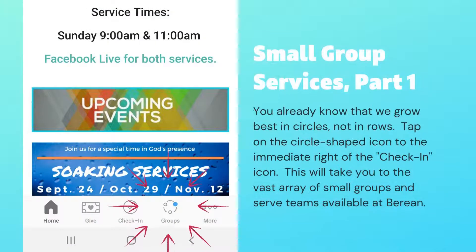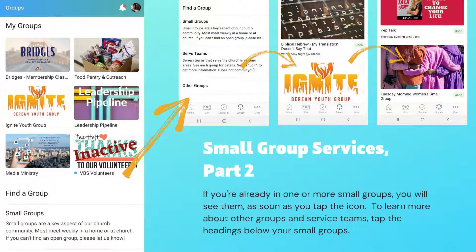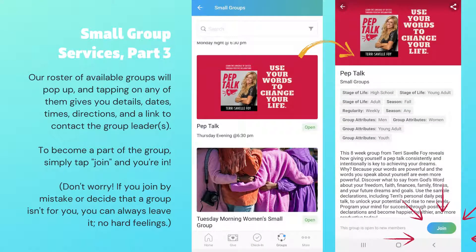Now let's look into one more area today. Look again to the bottom of your screen and notice, to the immediate right of the check-in icon, a circle connecting three small dots — that's the groups icon. Tap that now and you will open up a veritable encyclopedia of small group information. If you are already part of any small groups, those groups will appear on top. You can tap any of them for immediate access to the latest details. Below your small groups you will see headings for additional small groups as well as serve teams. Tap on either one to access details of any of over a dozen groups and teams — you'll get information about dates, times, leaders, and directions. You can also join a team or small group here as well.